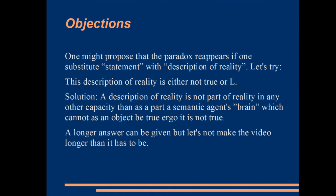A second objection is that a paradox might reappear if we change the context slightly, such as replacing the word 'statement' with 'description of reality.' So what happens if we do that? We get: 'this description of reality is either not true or L.' One might think that since descriptions of reality are abstract or conceptual things, they can therefore be true or false. However, even if that were the case, I still think that a description of reality is not part of reality in any capacity other than as part of a semantic agent's brain, which cannot as an object be true — ergo, it's not true.